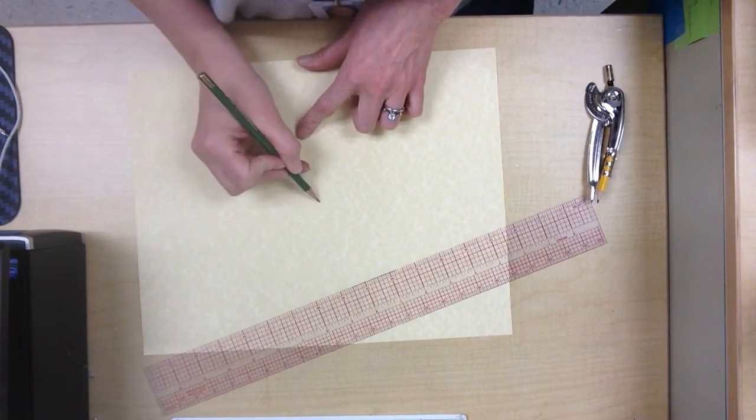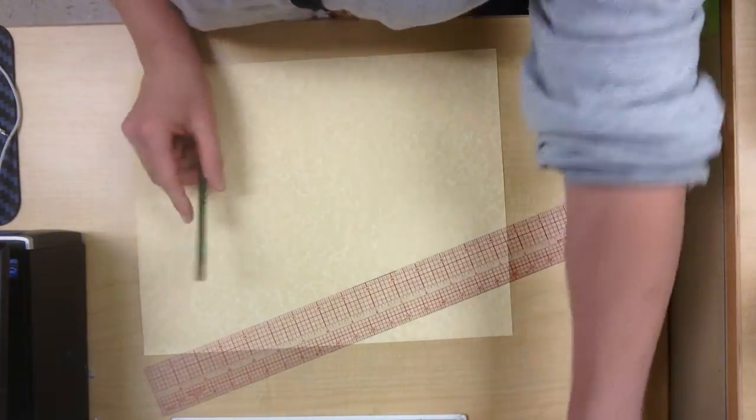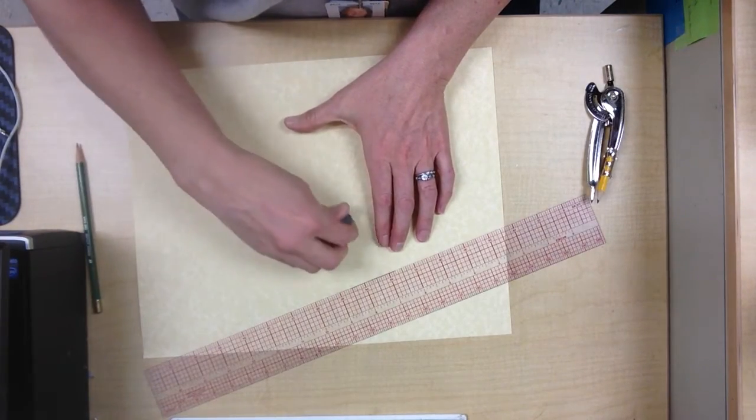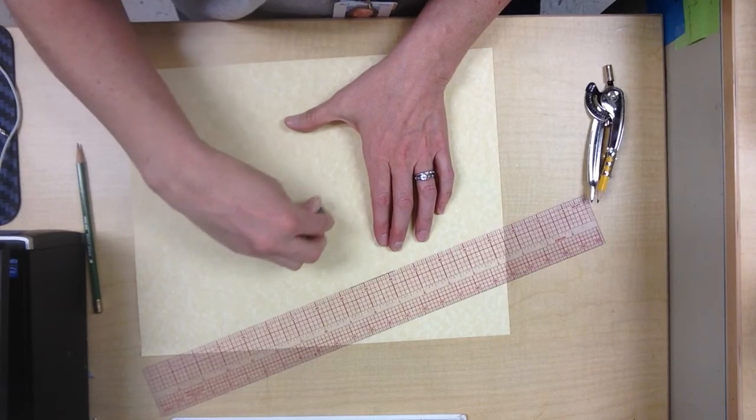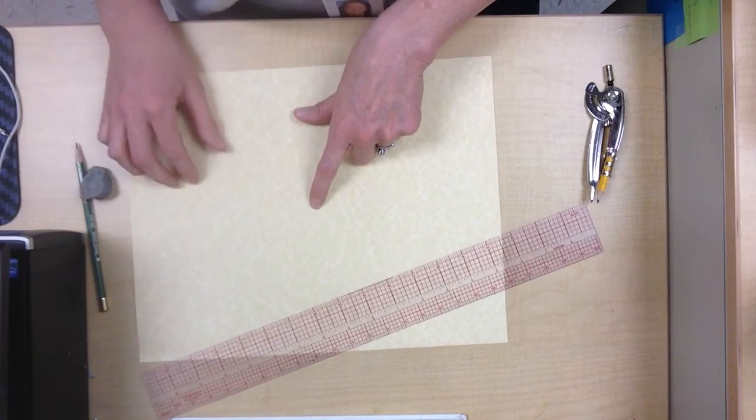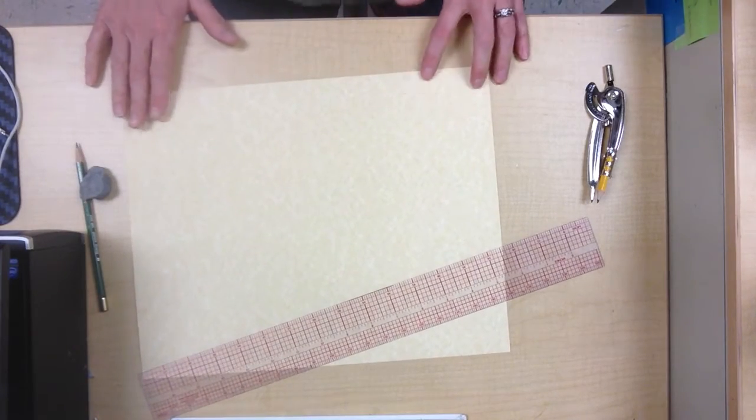Gotta love geometry. So that's the center of your paper. Now, I like to encourage my students to clean up as they go, so have them clean up those extra lines. All you need is that little intersection because that shows you the center of your paper.